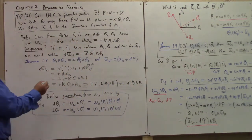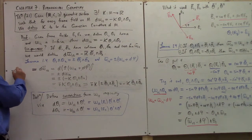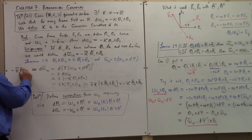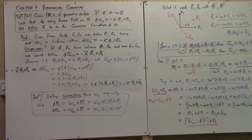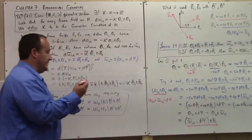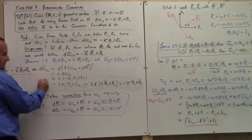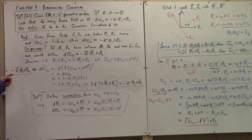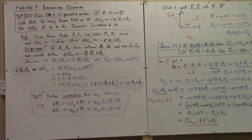But this was also, by definition, equal to minus K bar theta bar 1 wedge theta bar 2. Comparing those two expressions, we learn that K bar equals K. This shows it's immaterial which frame we use to calculate the Gaussian curvature — it's the same thing. Our choice of frame field on the surface cannot affect our calculation of the Gaussian curvature.